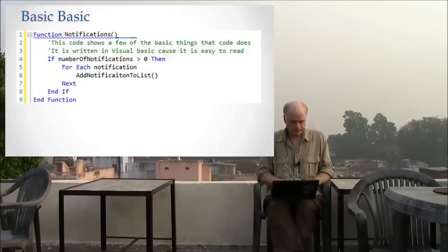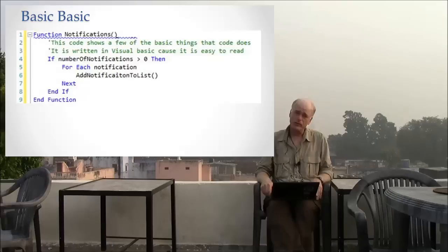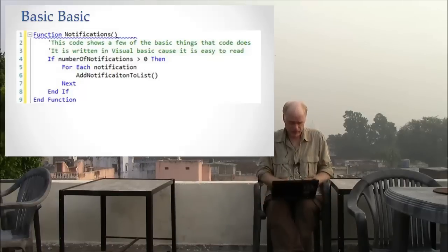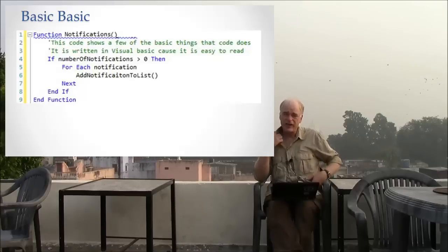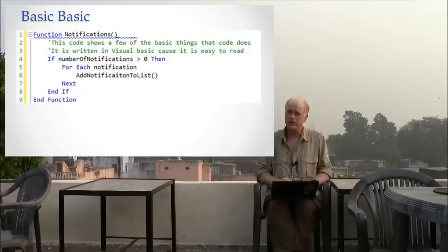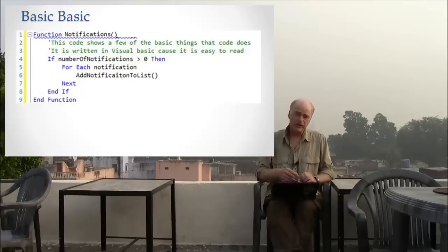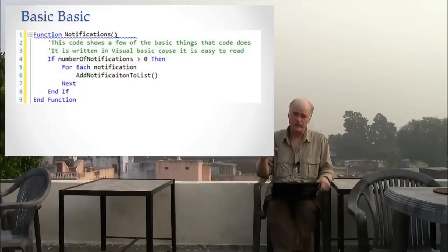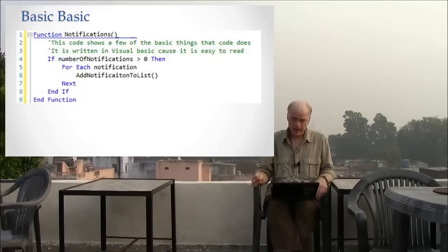Line 1 says this is a function. The idea of a function is it's something that the system does. In this case, we're talking about a notifications function. This is not the real notification function that Facebook uses, but you can use it as an example to understand what something like notifications might actually consist of. It's one function among many — you can imagine thousands of functions that Facebook does, all interacting to create the Facebook system. Line 1 declares: I am the notification function.